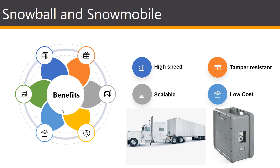Once it arrives, attach the appliance to your local network, download and run the Snowball client to establish a connection, and use the client to select the file directories you want to transfer. The client will automatically encrypt and transfer the files at high speeds. Once the transfer is complete, the shipping label will automatically update and you can track the job status using your Management Console. Snowball uses multiple layers of security including tamper-resistant enclosures, 256-bit encryption, and the industry-standard Trusted Platform Module (TPM) to ensure security and full chain of custody of your data.